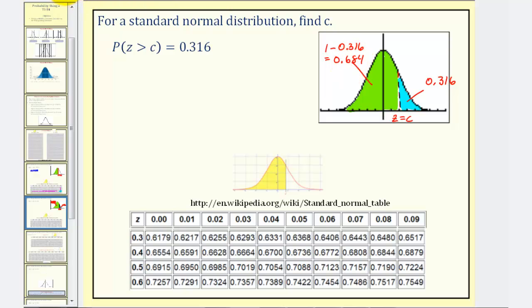So now going to our table, the closest probability, or area, is 0.6844. Notice how for this probability, the Z-score would be 0.48. So we'll say C is approximately 0.48.